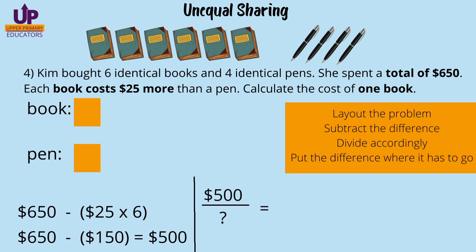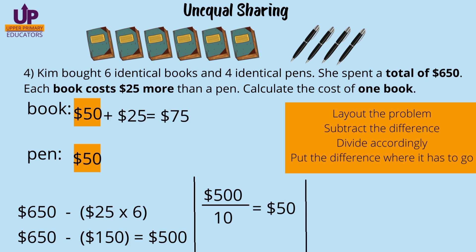So we are left with $500. The next step is to divide accordingly. What must we divide $500 by? Some students divided by two, but we don't have two items — we have six books and four pens, so ten items in all. 500 divided by 10 gives us $50. So I've filled the empty boxes: $50 for the book and $50 for the pen. Now we put the difference where it has to go. Since the book costs $25 more, the book will have $50 plus an additional $25, so one book costs $75 and the pen costs $50.